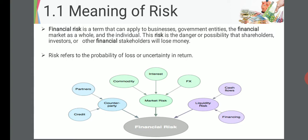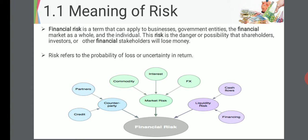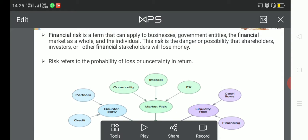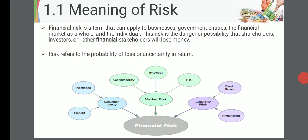Financial risk is a term that can apply to businesses, government entities, the financial market as a whole, and individuals. Risk is the danger or possibility that shareholders, investors, or other financial stakeholders will lose money. Risk refers to the probability of loss or uncertainty in the future. In one sentence: risk is the probability of loss or uncertainty in the future. Financial risk specifically is the probability of financial loss or uncertainty in the financial return.